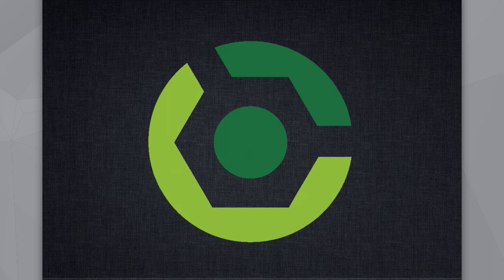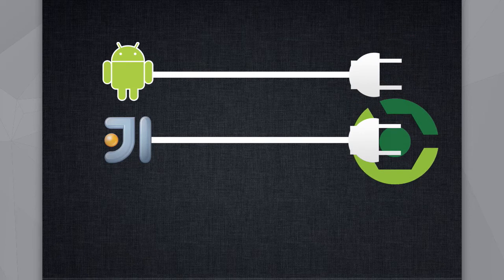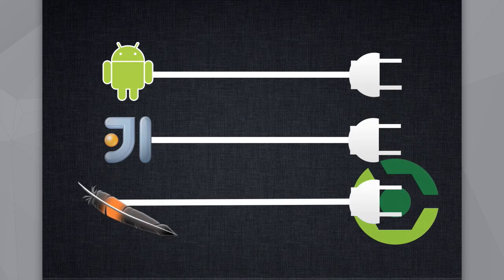We've already talked about what Gradle plugins do — they add behavior to your code and new capabilities. We've talked about the Android plugin for Gradle, which allows you to compile your Android projects. There are other interesting plugins too, like an IntelliJ plugin which lets you read IntelliJ project files, and a Maven plugin which lets you publish artifacts to a Maven repository. You might want to create your own for things like CI, post-processing, or redistributing code.